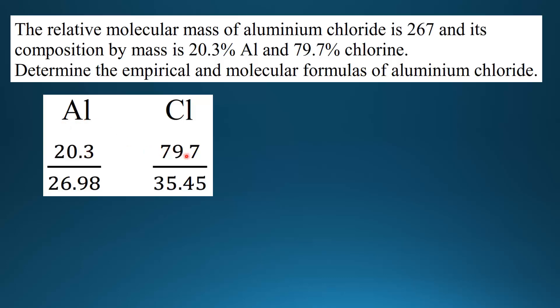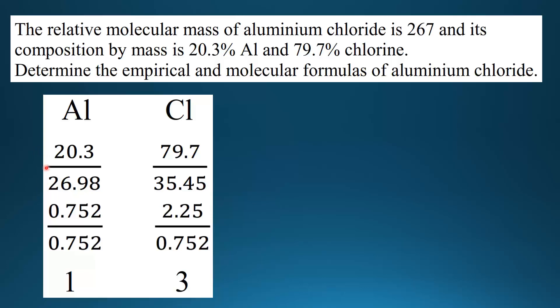Then you write down the percentage by mass of each. So 20.3% for aluminium and 79.7% for chlorine. Then you divide that by the molar mass. The molar mass of aluminium is 26.98 and the molar mass of chlorine is 35.45. When we divide these values we get 0.752 for aluminium and 2.25 for chlorine.